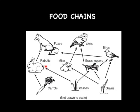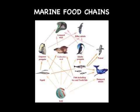Food chains begin with radiant energy from the sun. Producers, which are plants, transform the sun's energy into the chemical energy found in food. In an aquatic food chain, phytoplankton can be the producers.